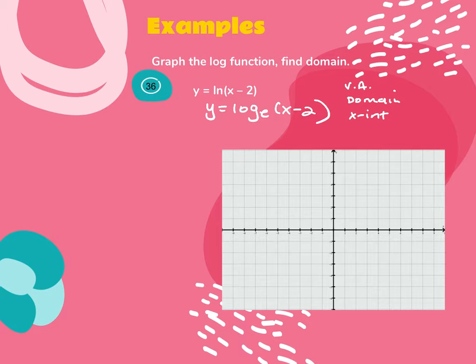Your quiz is going to ask for those three things on your log graphs. On an exponential graph, it's going to ask for your horizontal asymptote, your range, and your y-intercept.